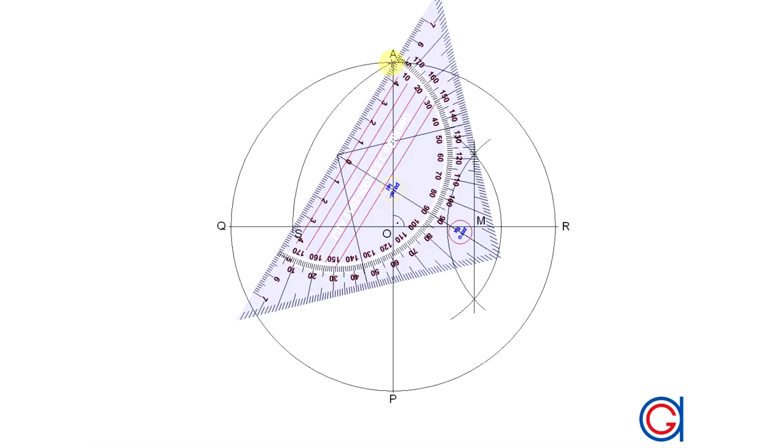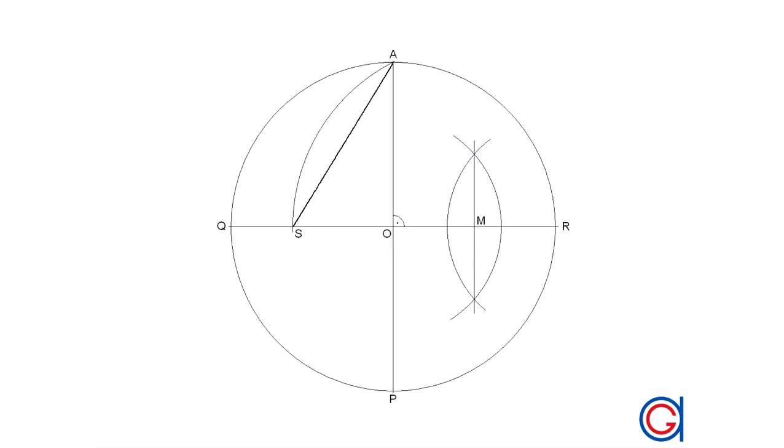So now, we join point S to point A with a thicker line. And this line segment SA will be the length L of one side of our pentagon that we want to draw.